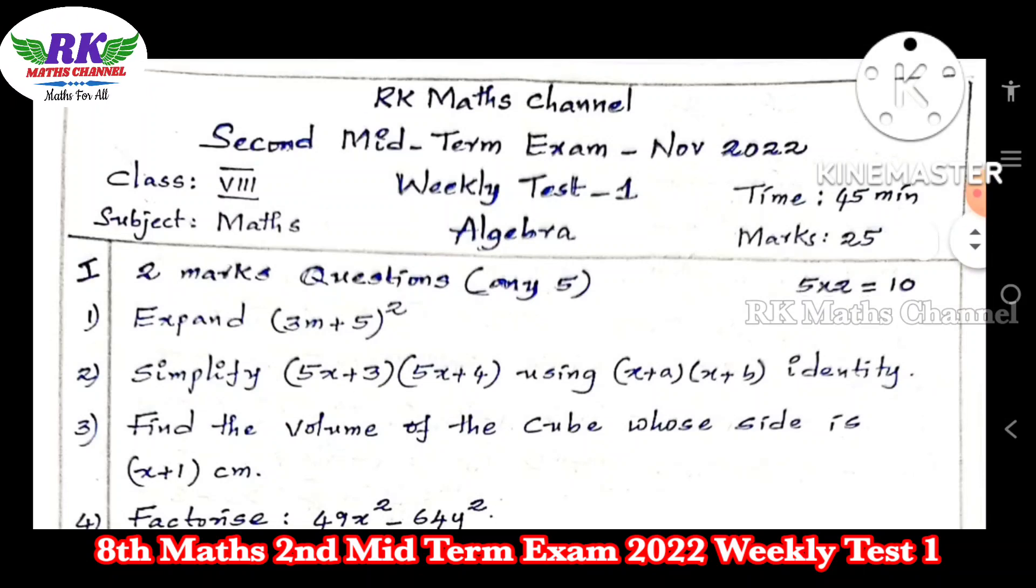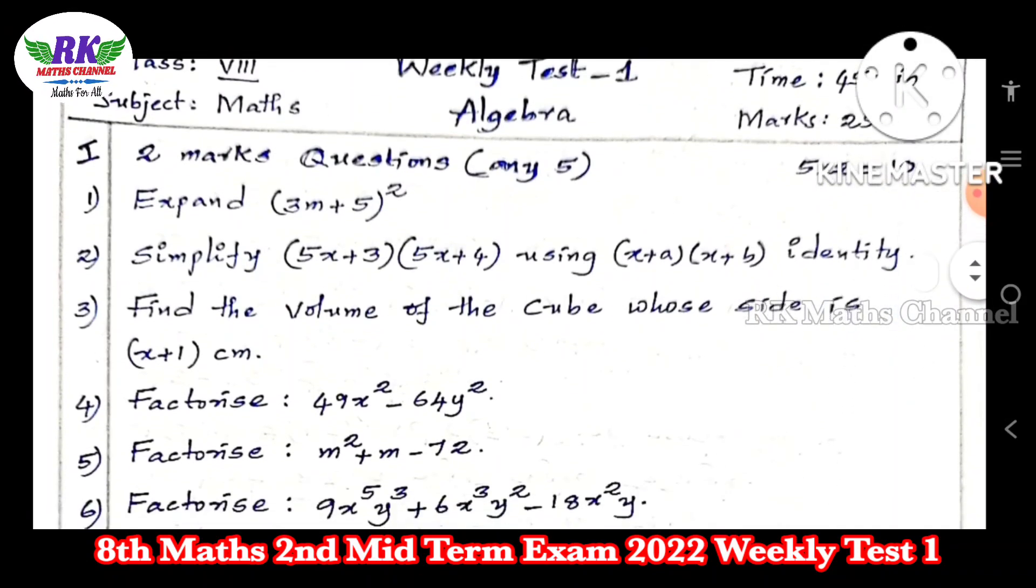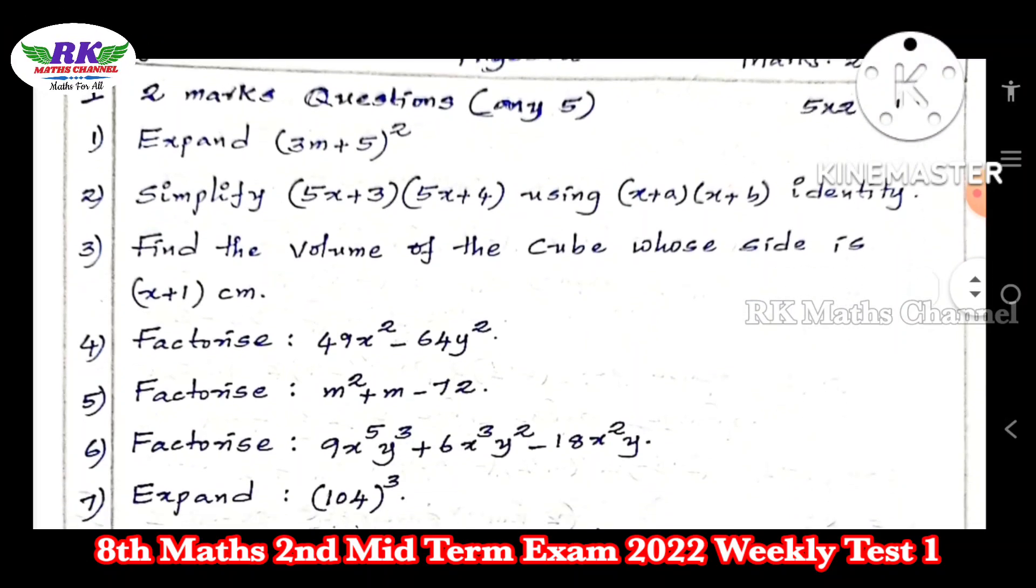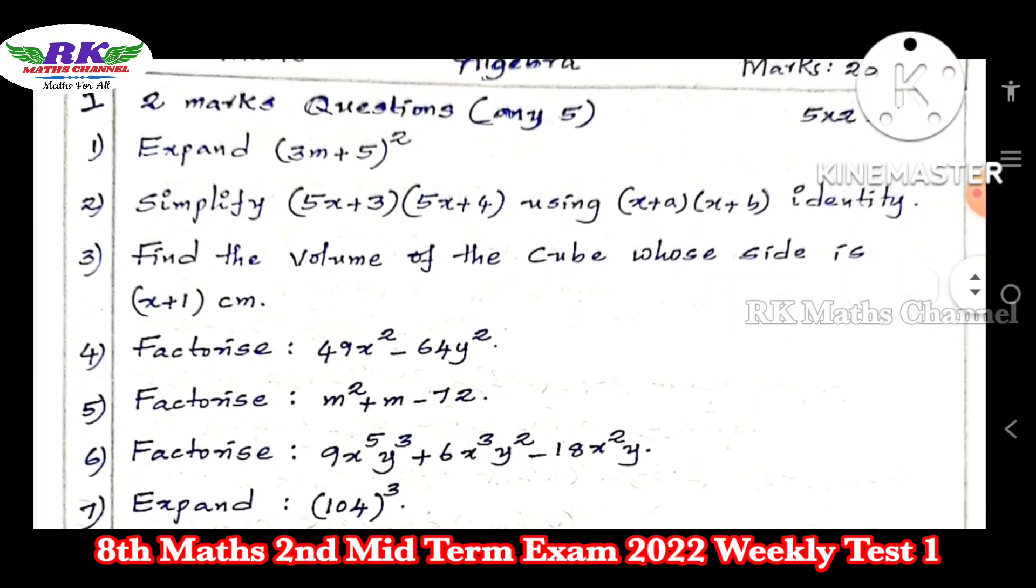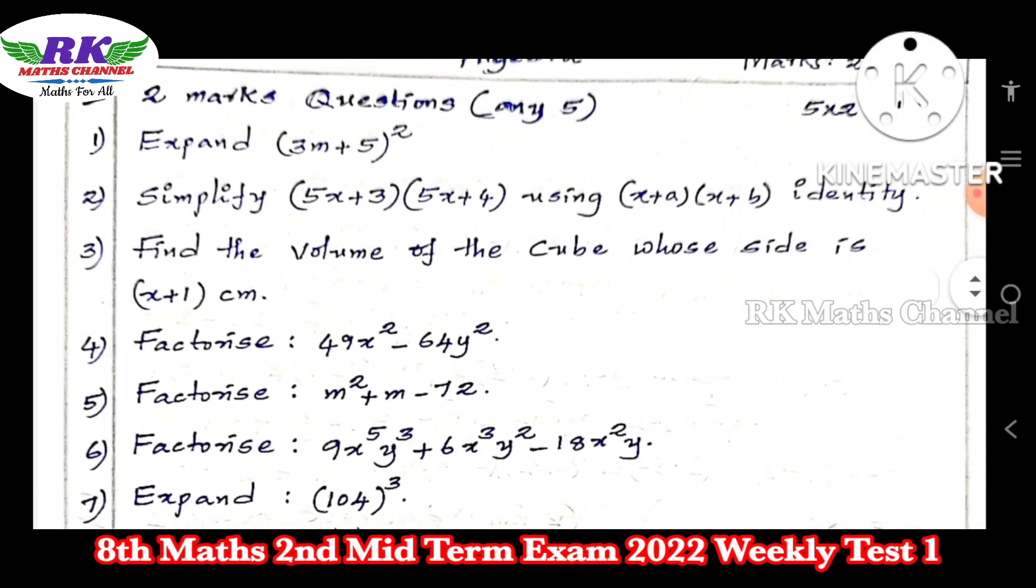The question paper has 25 marks. It is simple. You have seven questions worth two marks and five questions worth three marks. So expand (3m + 5)². This is a+b whole square formula under the identity.